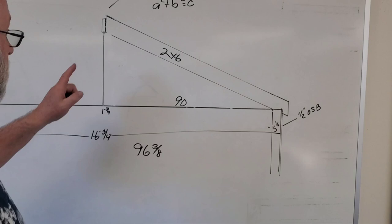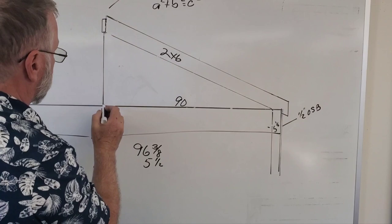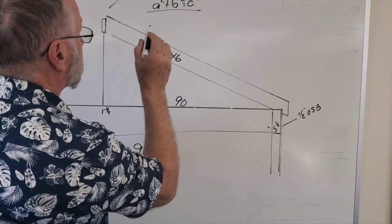Then I have to subtract half of the ridge board. I have to subtract this 5.5, the thickness of my wall. So I want this point to this point, the hypotenuse of a triangle. Remember from your school days: a² + b² = c².